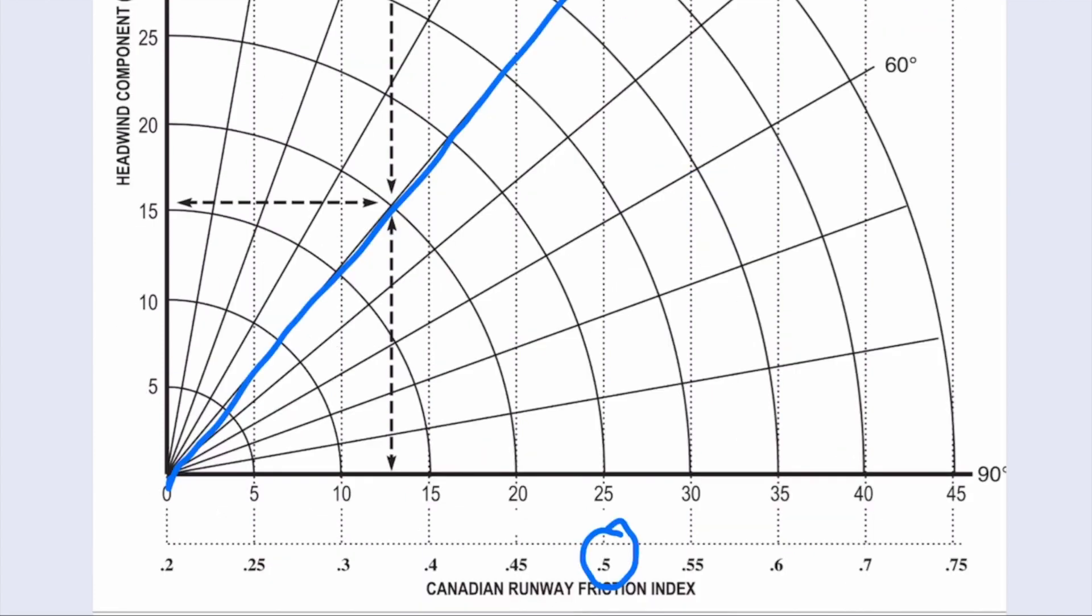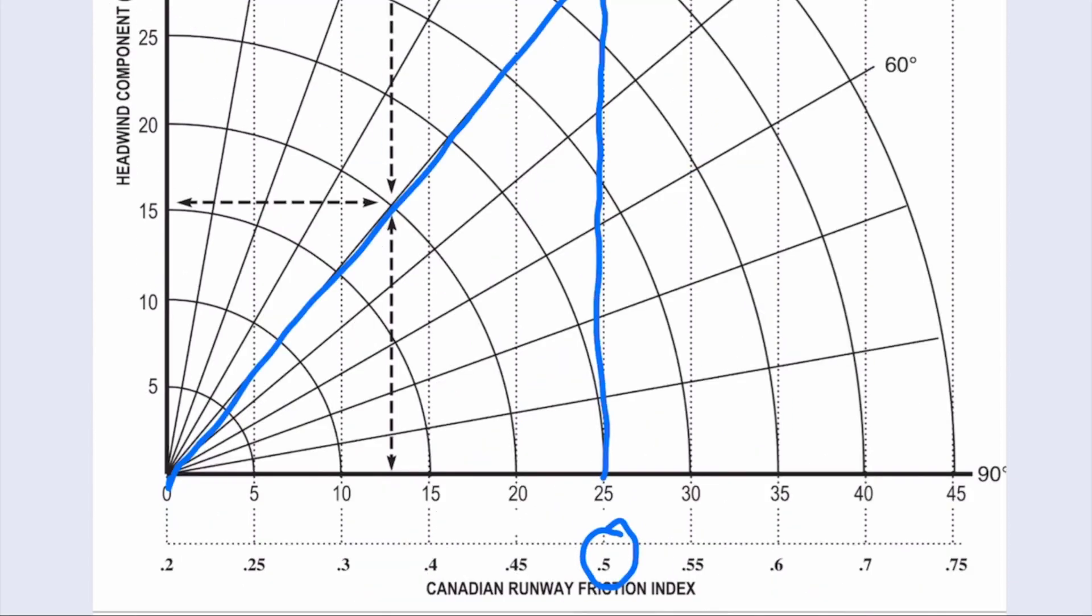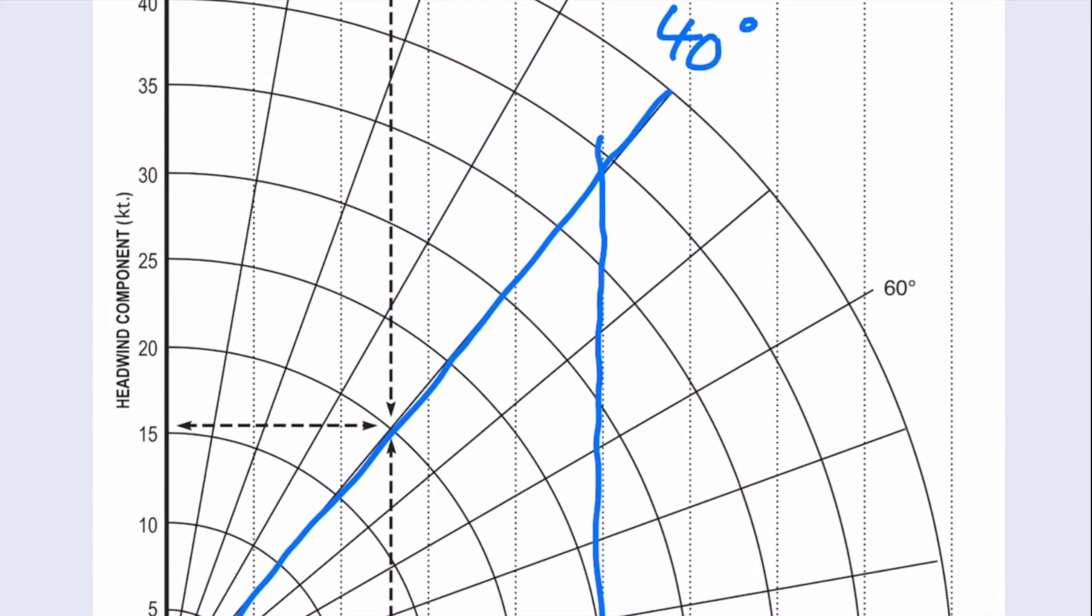Next what you want to do is to draw the line upwards from the CRFI until it intersects the 40 degree line, and I do apologize that's the straightest line I could draw. So now we can see the maximum crosswind recommended based on a CRFI of 0.5 will be 25 knots and the wind speed if you follow this arc all the way out will be roughly 38 knots.